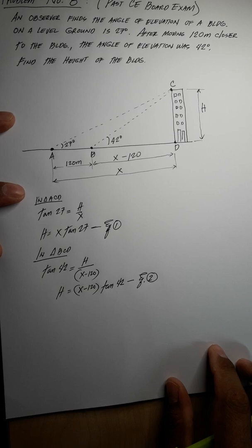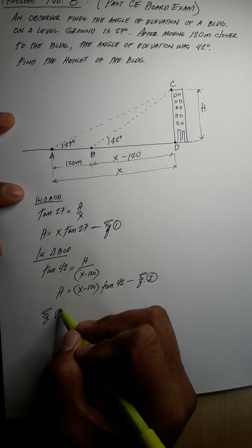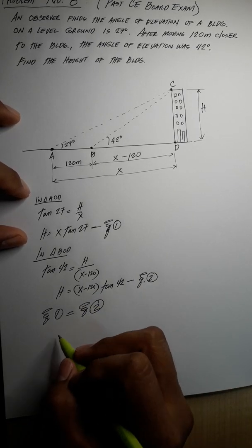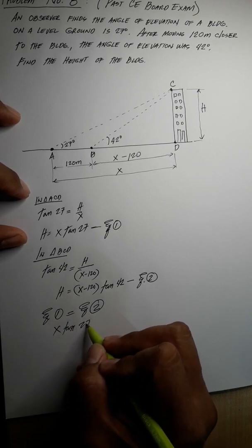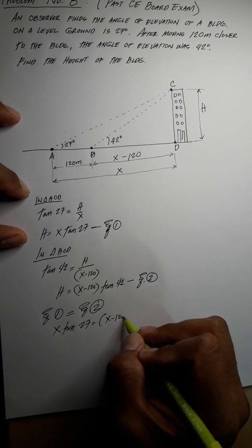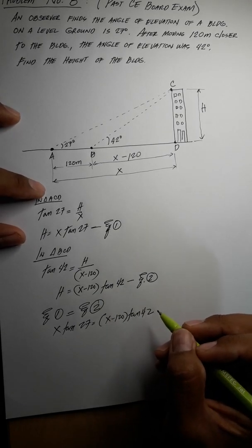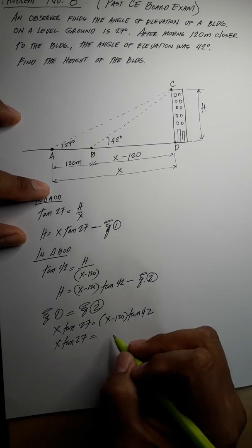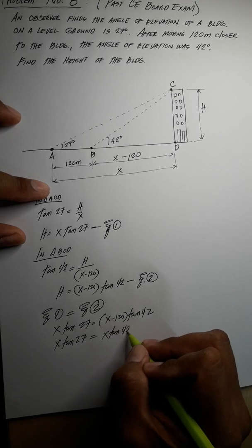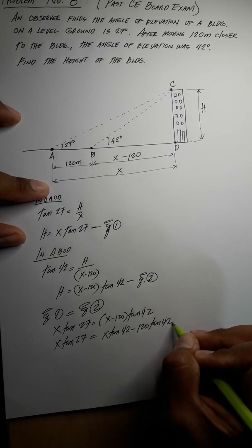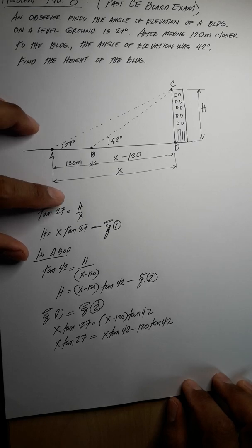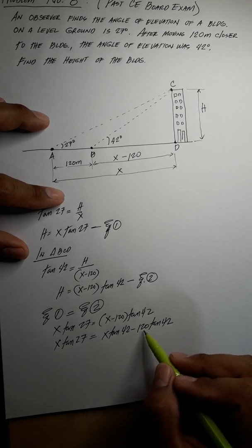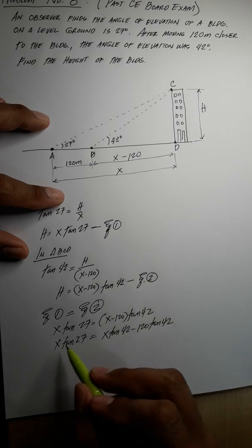Setting equation one equal to equation two: x times tangent 27 equals (x minus 120) times tangent 42. Distributing: x tangent 27 equals x tangent 42 minus 120 tangent 42. We then transpose by adding 120 tangent 42 to both sides and subtracting x tangent 27 from both sides.